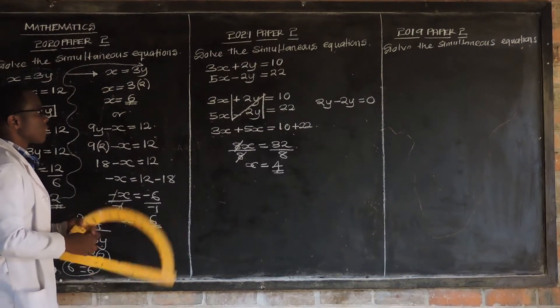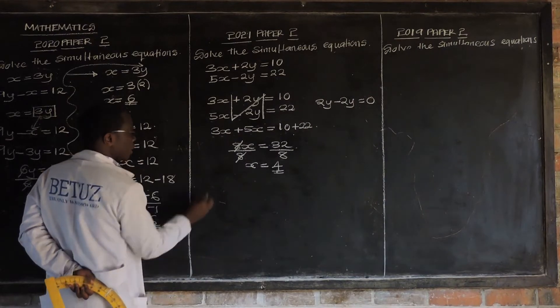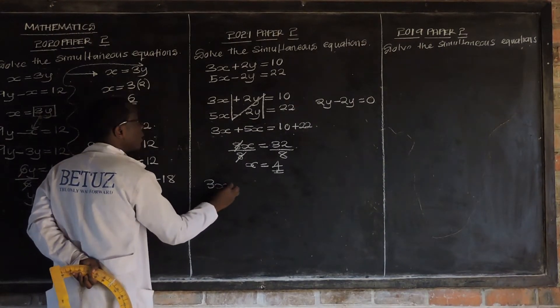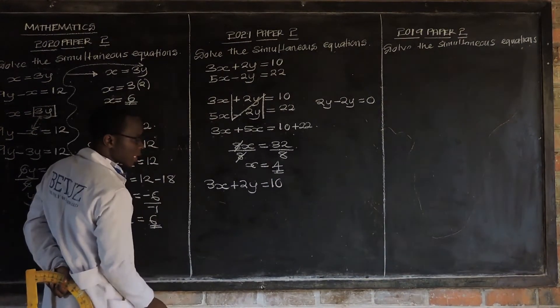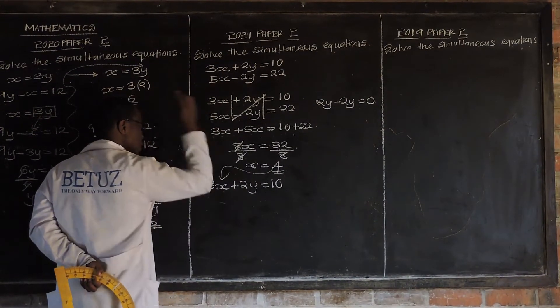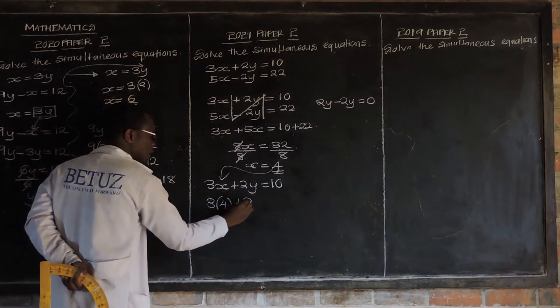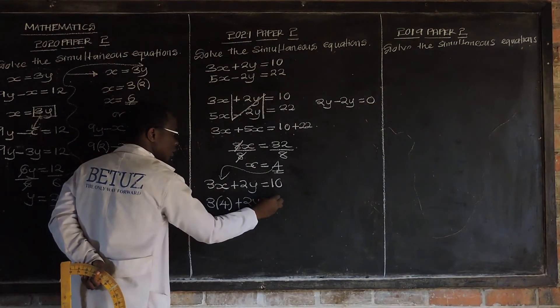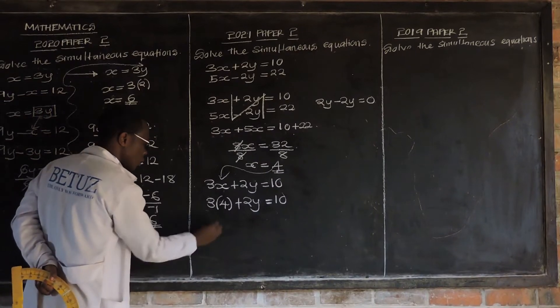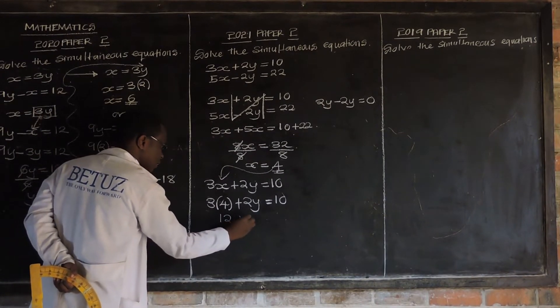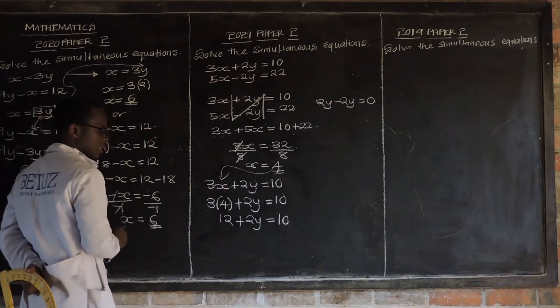You can now find the value of y. Using any of these two equations. Just look at x equal to the line. Which is 3x plus 2y is equal to 10. So, when x is 4, we put 4. So, 3 times 4 plus 2y is equal to 10. So, what is 3 times 4? 12 plus 2y is equal to 10.